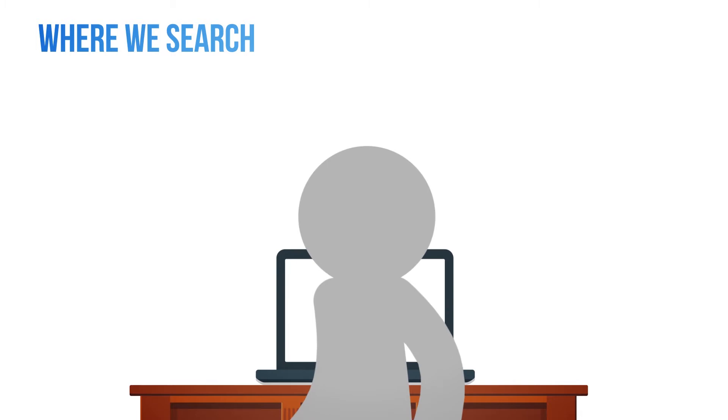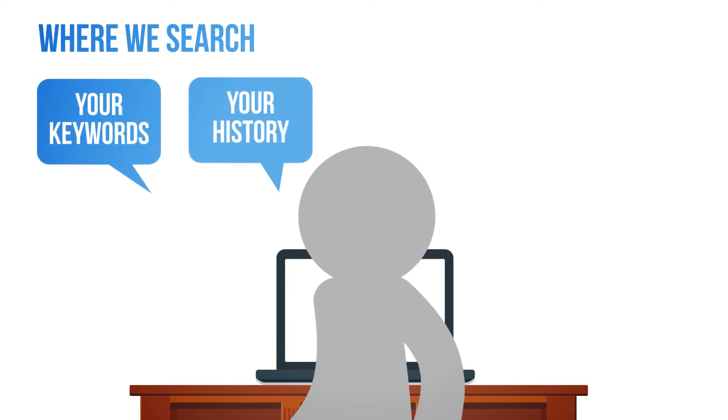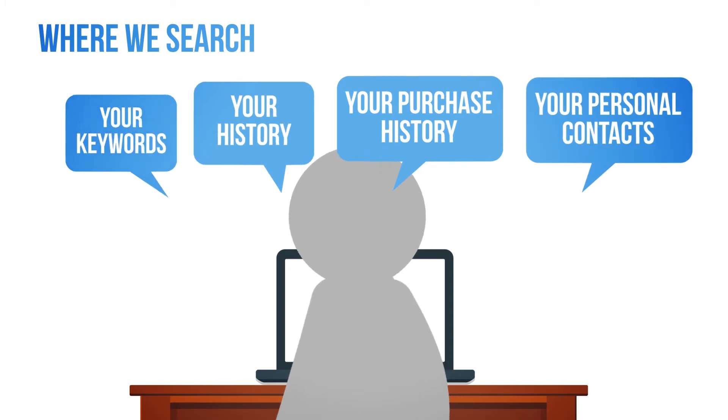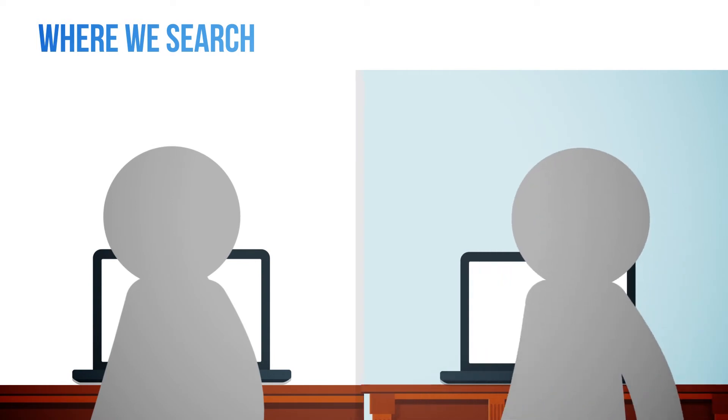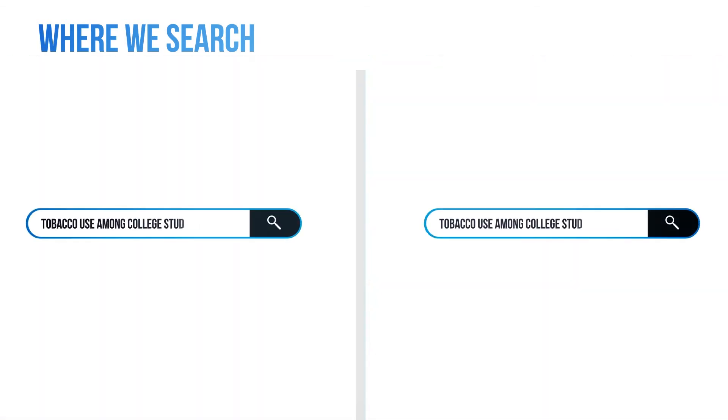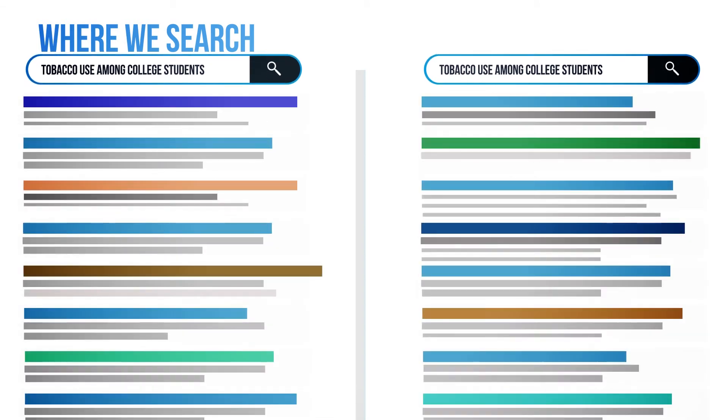Google's algorithms use not only your keywords, but also your search history, purchase history, and personal contacts to determine the order of your search results. Google results are personalized for you, not your topic. This is useful if you're looking for directions or want a new restaurant to try, but relying exclusively on Google or any single search interface for academic research will lead to skewed results, limiting your ability to justify why this source is the best choice to answer your research question.